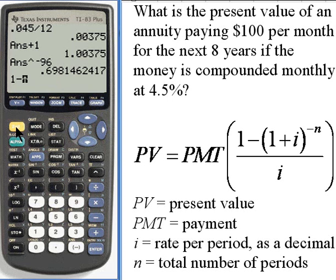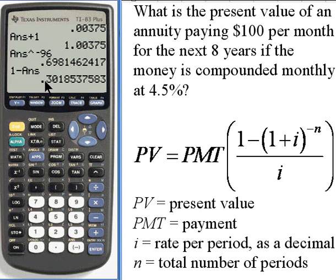So to get the previous answer, I press 2nd, and then right next to the enter button is the negative sign, and above that little negative sign it says the answer. So now we have 1 minus the previous answer, that's 0.3018, and that's the numerator for this fraction.